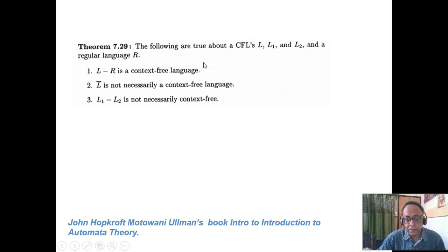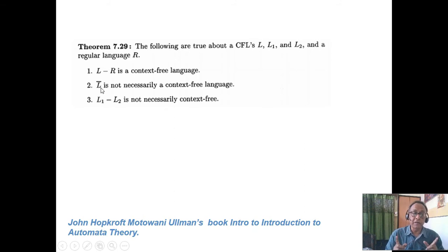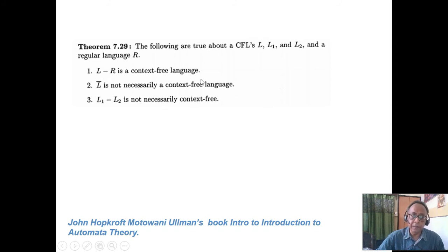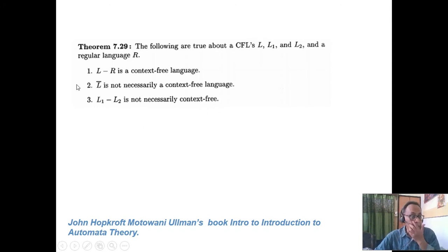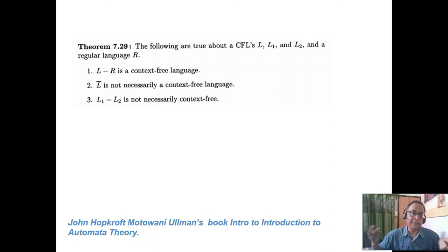It is not true for deterministic context-free: complement of deterministic context-free is a deterministic context-free. But if you take the general context-free grammar, complement of a context-free grammar may or may not be context-free. Also, a context-free language minus another context-free language is not necessarily context-free. For regular language, R1 minus R2 is always a regular language. But L1 minus L2 where both are context-free may be a completely different language — may be context-sensitive.